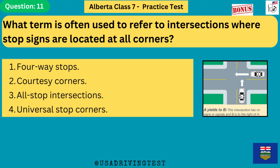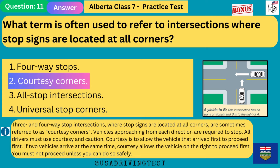What term is often used to refer to intersections where stop signs are located at all corners? The answer is 2: courtesy corners. Three- and four-way stop intersections, where stop signs are located at all corners, are sometimes referred to as courtesy corners. All drivers must use courtesy and caution — the vehicle that arrived first proceeds first; if two arrive at the same time, the vehicle on the right proceeds first. You must not proceed unless you can do so safely.